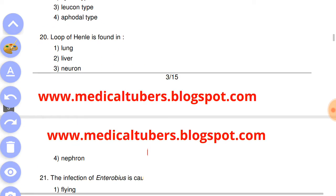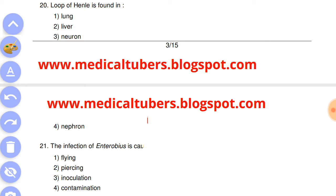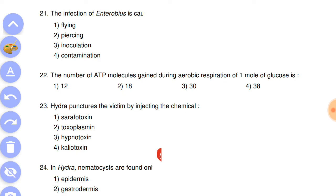Question number 20: loop of Henle is found in answer is the fourth, nephron. Next question: the infection of Enterobius is caused by answer is the fourth, contamination.